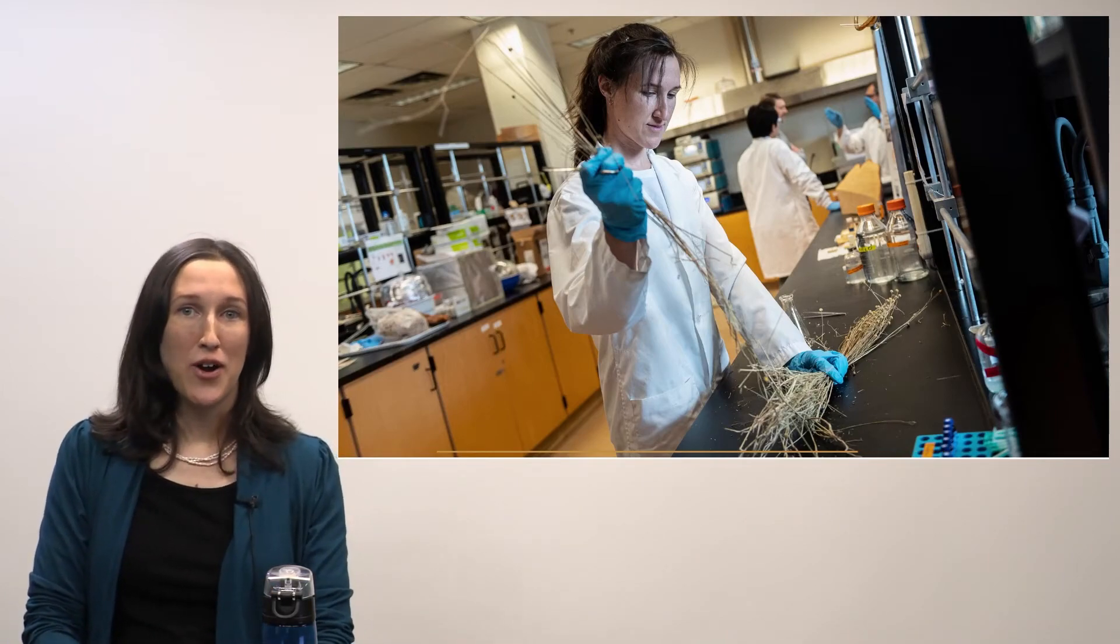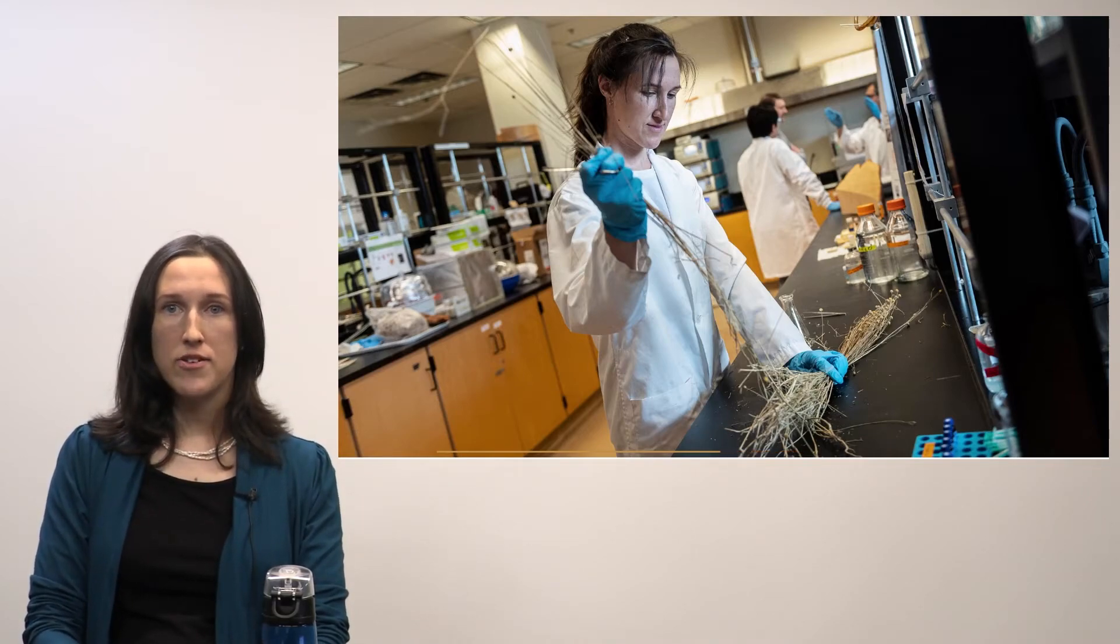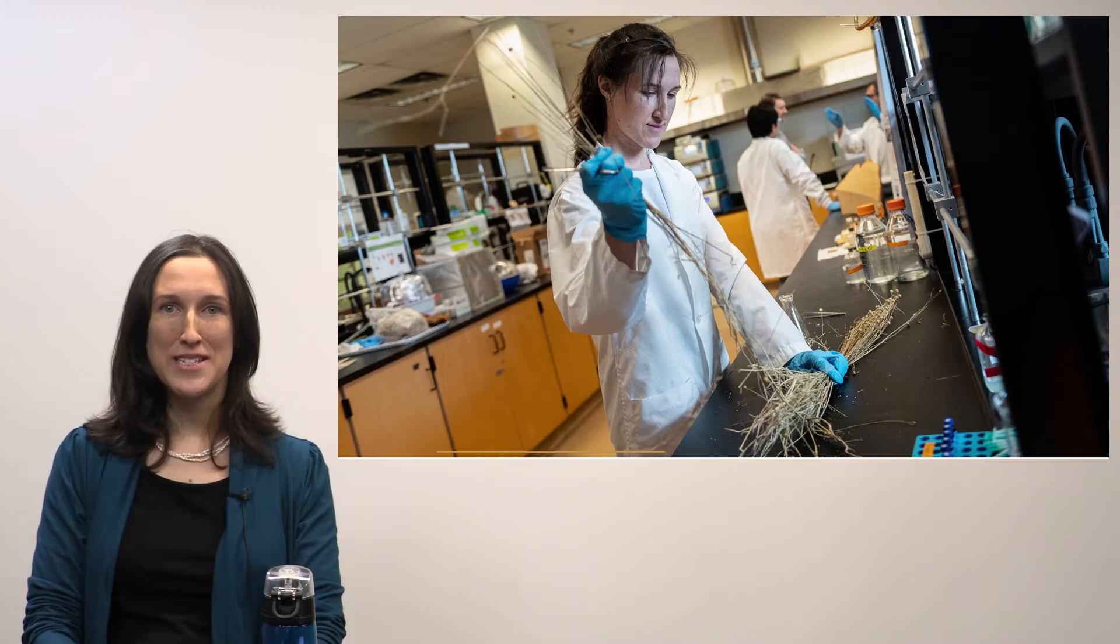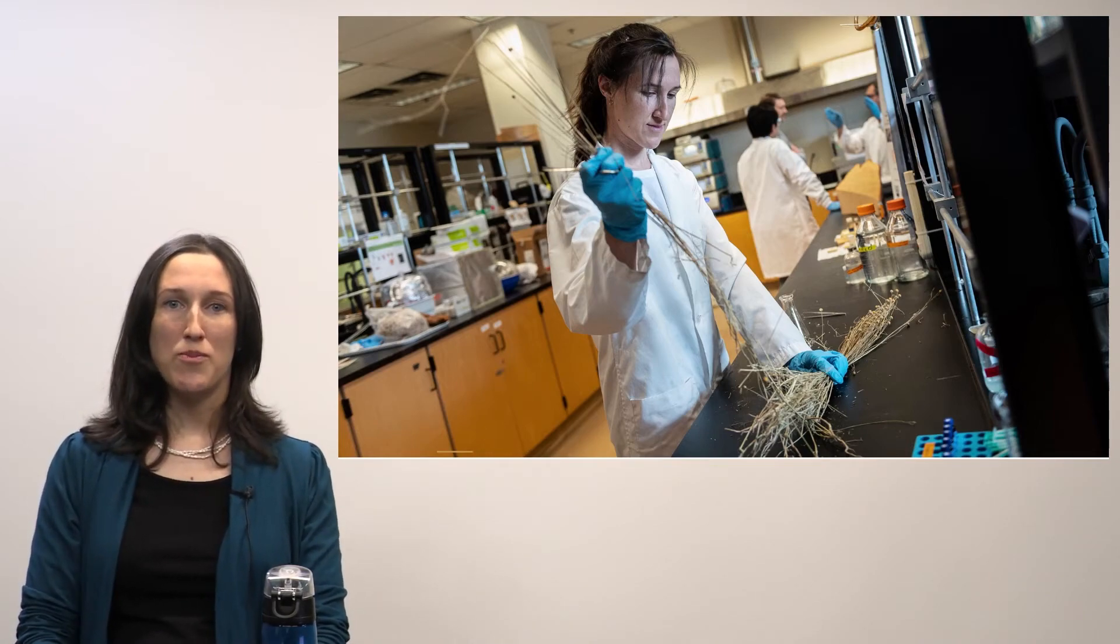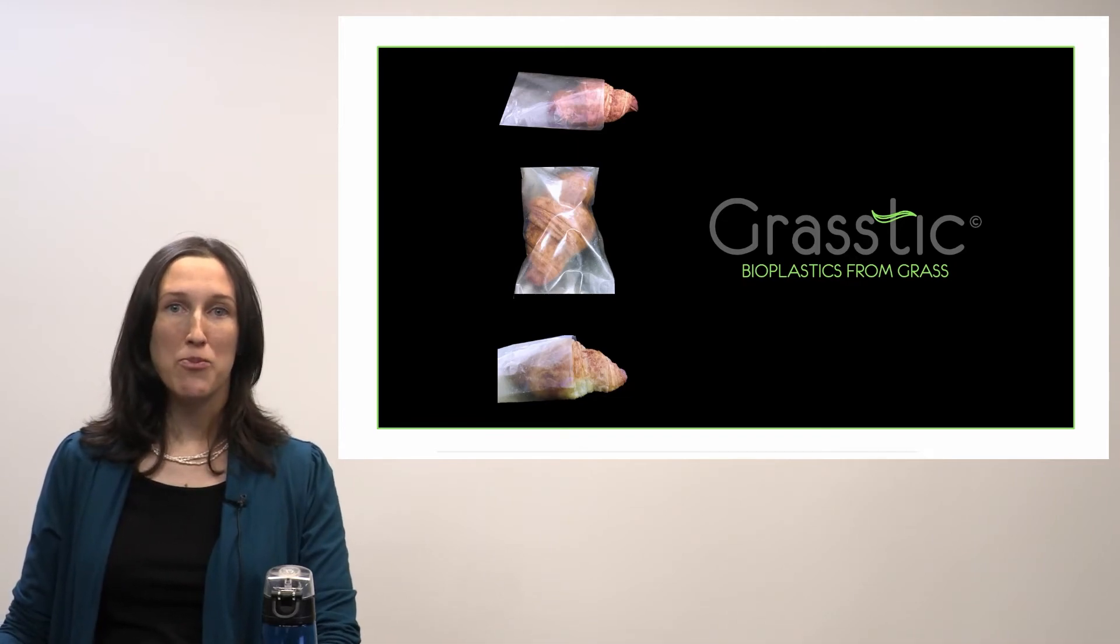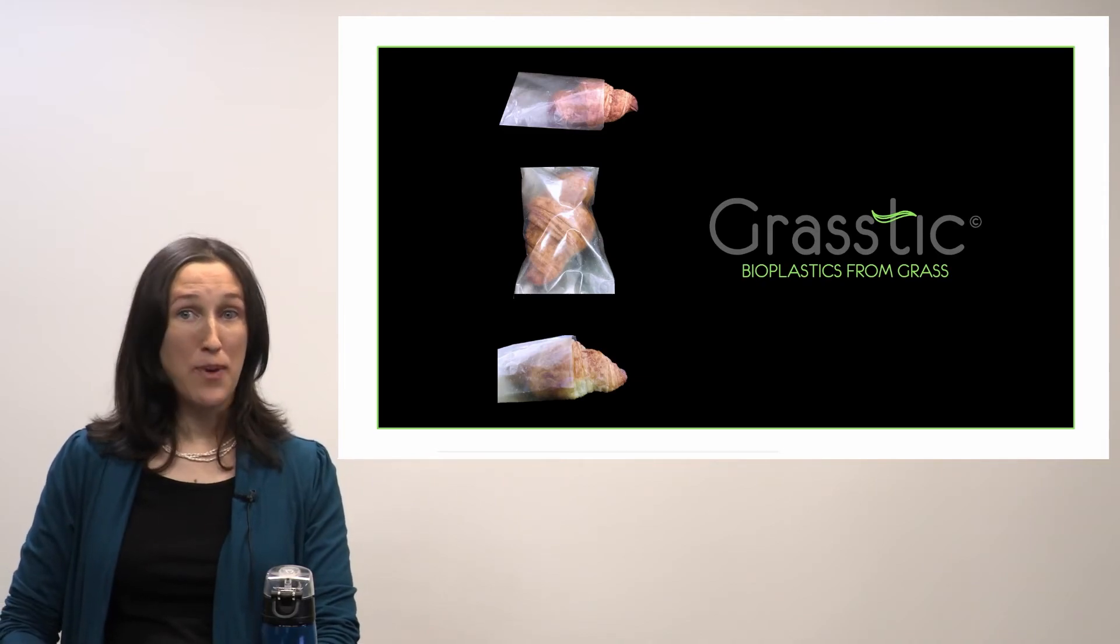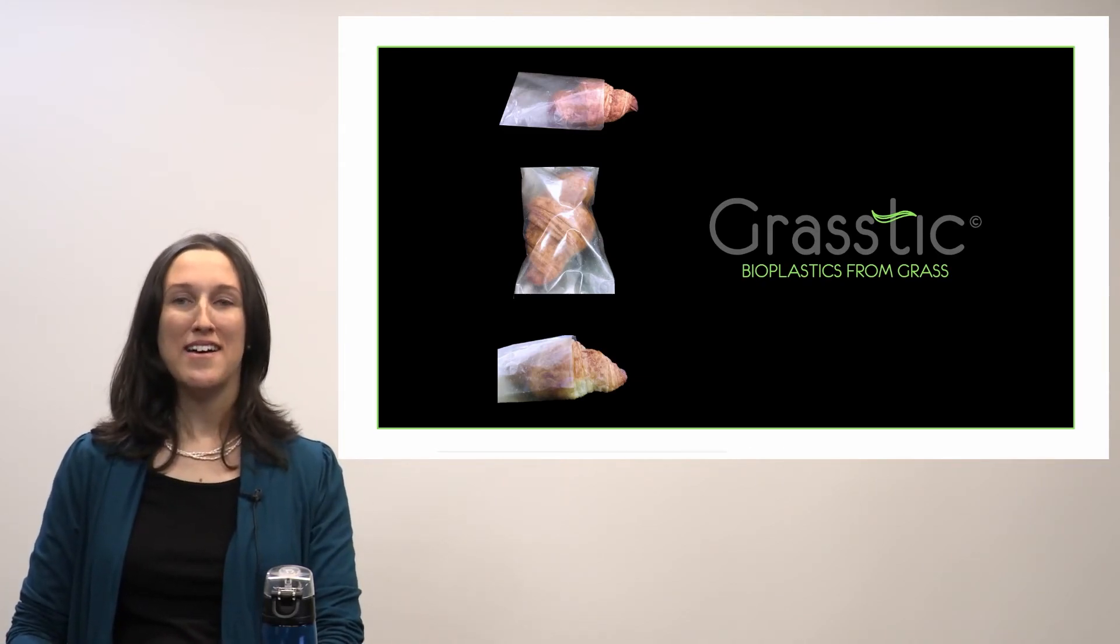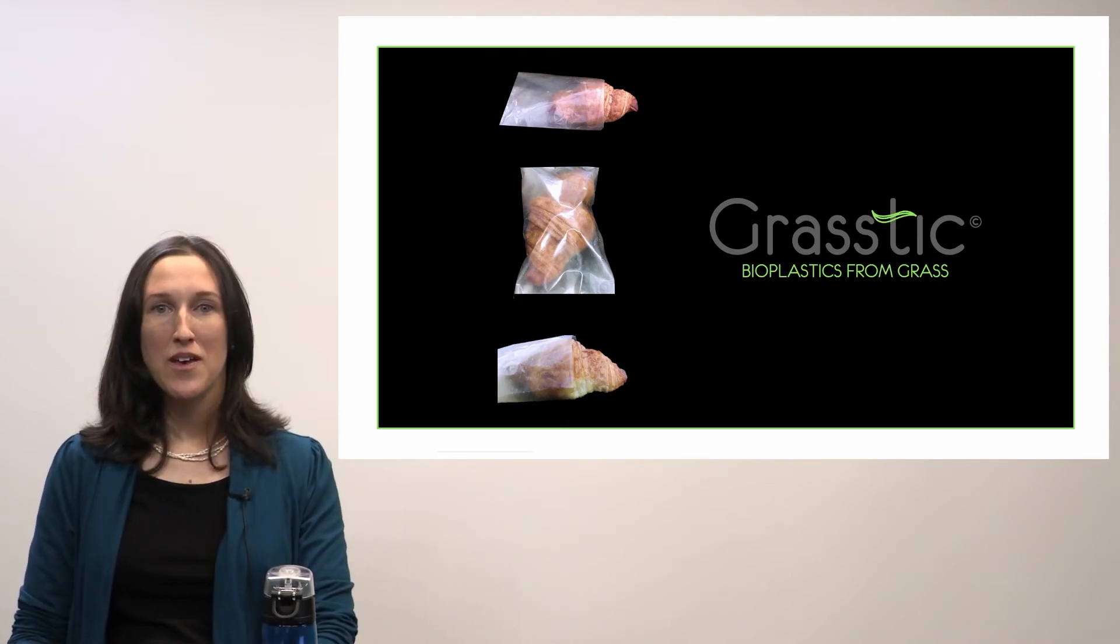I borrowed a trick from the paper-making industry used to whiten paper, and sure enough, it changed my starting material from yellow to white. Using the exact same processing conditions as I did before, I formed the xylan into sheets, and Grasstic—bioplastics from grass—was born. Look at that, it's transparent, flexible, aesthetically appealing, and no longer has a yellow tinge. So we're very excited to develop this further.